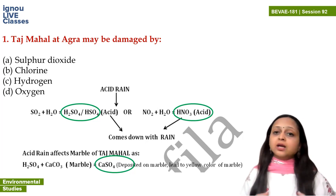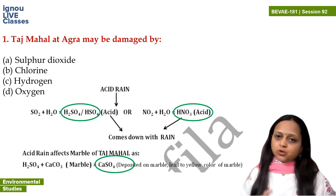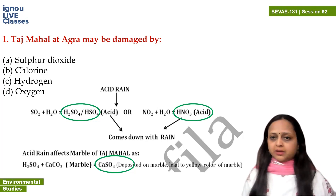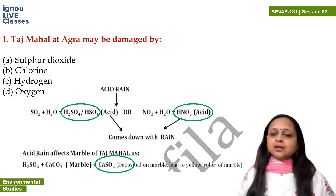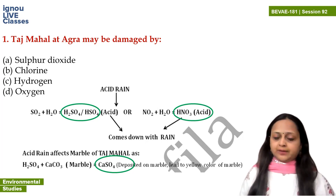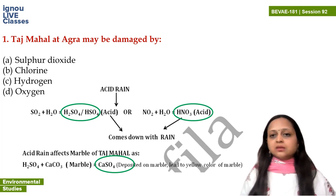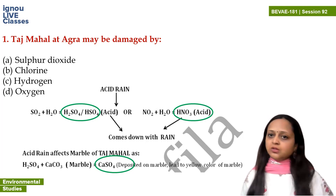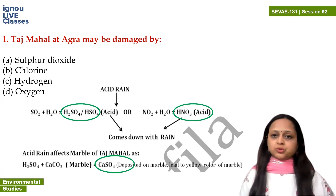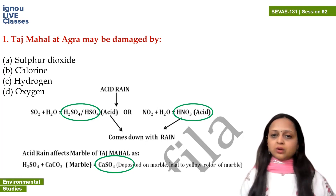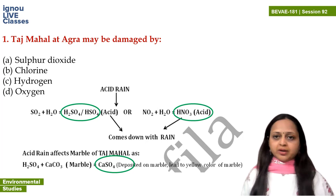This acid reacts with your marble and deposits on it — releasing carbon dioxide. So when we compare chlorine with sulfur dioxide, sulfur dioxide is much more prevalent in air. So sulfur dioxide is the answer.